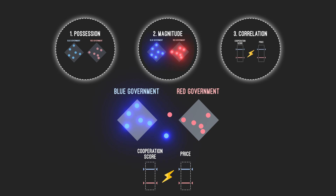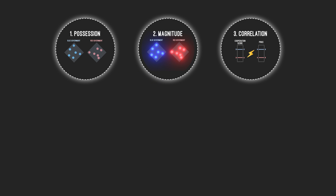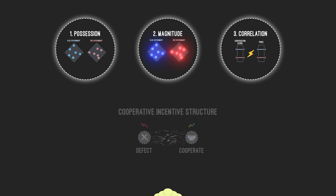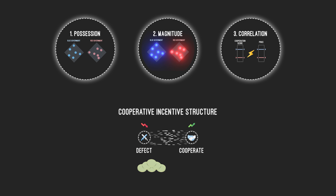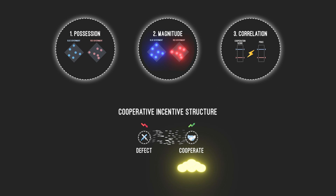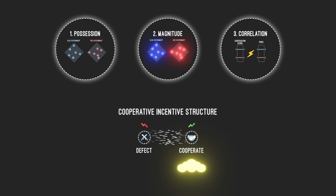If these three properties exist, then a cooperative incentive structure is formed. Governments are discouraged from being defective, since this will decrease the value of their holdings, and they are encouraged to be cooperative, since this will increase the value of the tokens they own, which they can then use to store value over time or sell them in exchange for something else in the future.